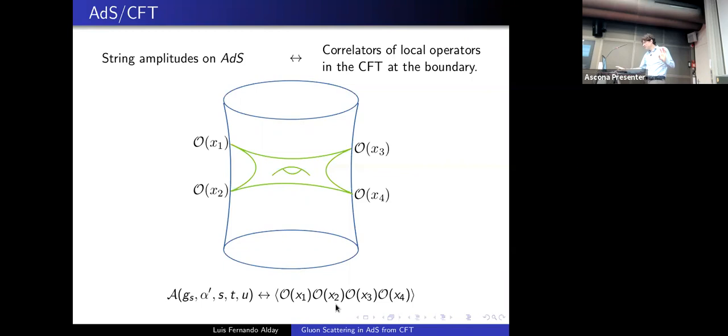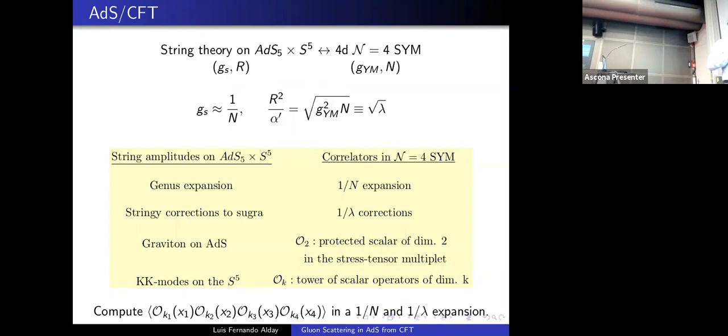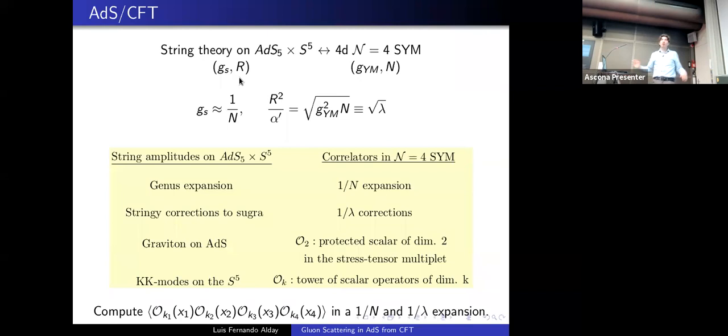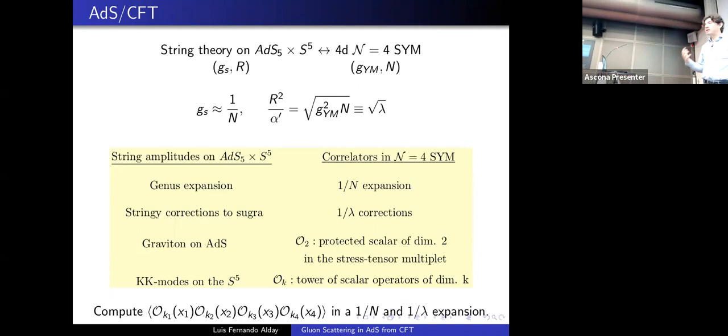In this talk we will focus on the usual example of strings on AdS5 × S5. This maps a string theory on AdS5 × S5 to four-dimensional N=4 super Yang-Mills. On one side we have two parameters: the string coupling constant and the radius of AdS or S5 in alpha prime units. On the other side we have N and the Yang-Mills coupling constant, and the AdS/CFT duality provides us with a dictionary.